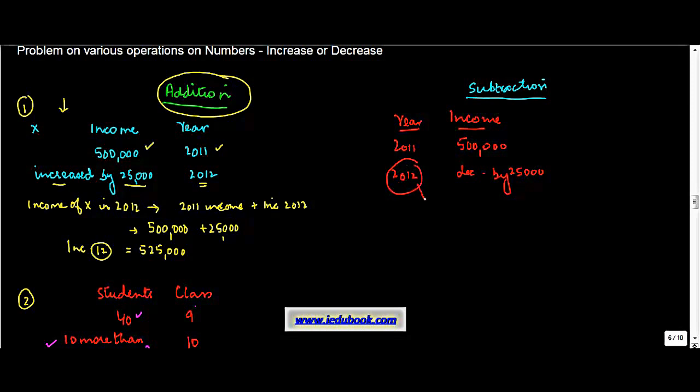What is the income in year 2012? 2012 income is equal to income of 2011 plus the increase in 2012. Just like we had an increase which was positive, we know a decrease is negative, so we subtract. And how much is the decrease? Decrease is 25,000. So I get 475,000 as the answer.